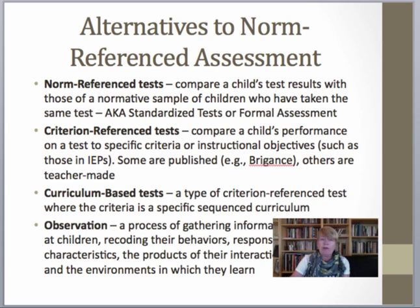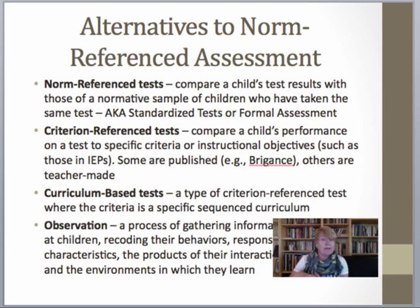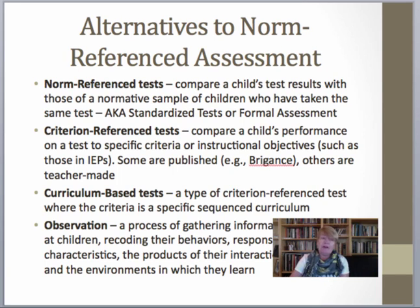Norm-referenced tests compare a child's results with those of a normative sample of children who have taken the same test — also known as standardized or formal assessment. As alternatives, we have criterion-referenced tests, which compare a child's performance to specific criteria or instructional objectives such as those in an IEP. Some are published and others are teacher-made. An example of a published criterion-referenced test is the Brigance, which is widely used in schools.